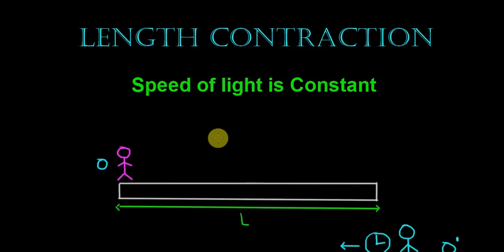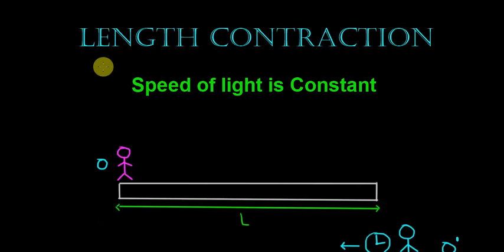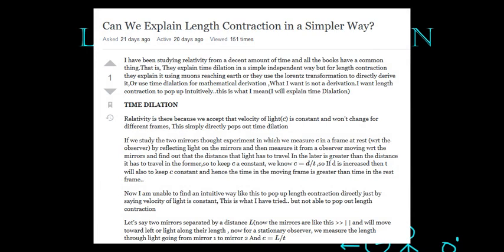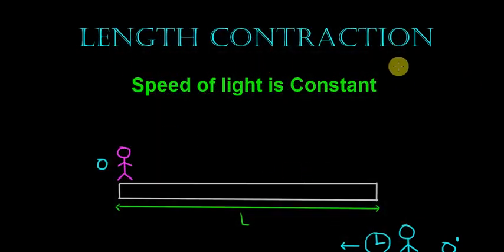In the previous video we derived the time dilation formula just by saying that the speed of light is constant. In this video, by doing the same, we will derive the second most important consequence of relativity: length contraction. Now we can derive length contraction in a very easy way by using Lorentz transformation, but Lorentz transformation does not give us an intuitive insight on why this length contraction occurs. So I found an approach from a Stack Exchange forum which will help us understand why length contracts and also derive the formula.